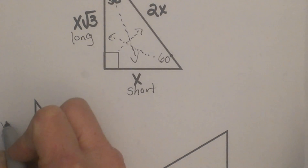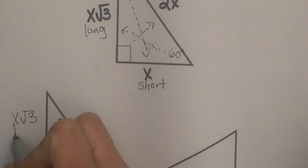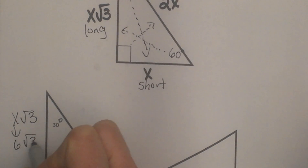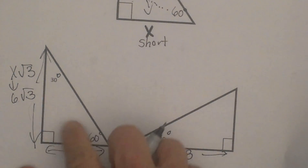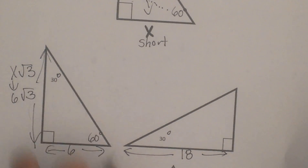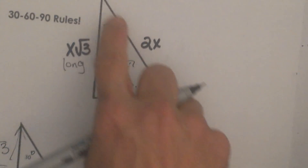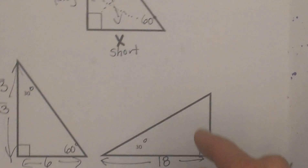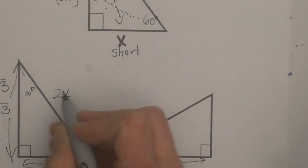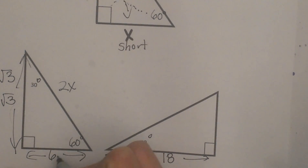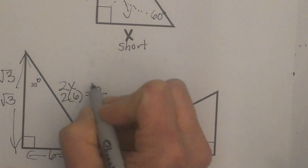To find the long leg, I take x times the square root of 3 and plug in 6 for x, so the long leg is 6 square root of 3. For the hypotenuse, the rule is 2 times x. Since x equals 6, the hypotenuse is 2 times 6, which is 12.